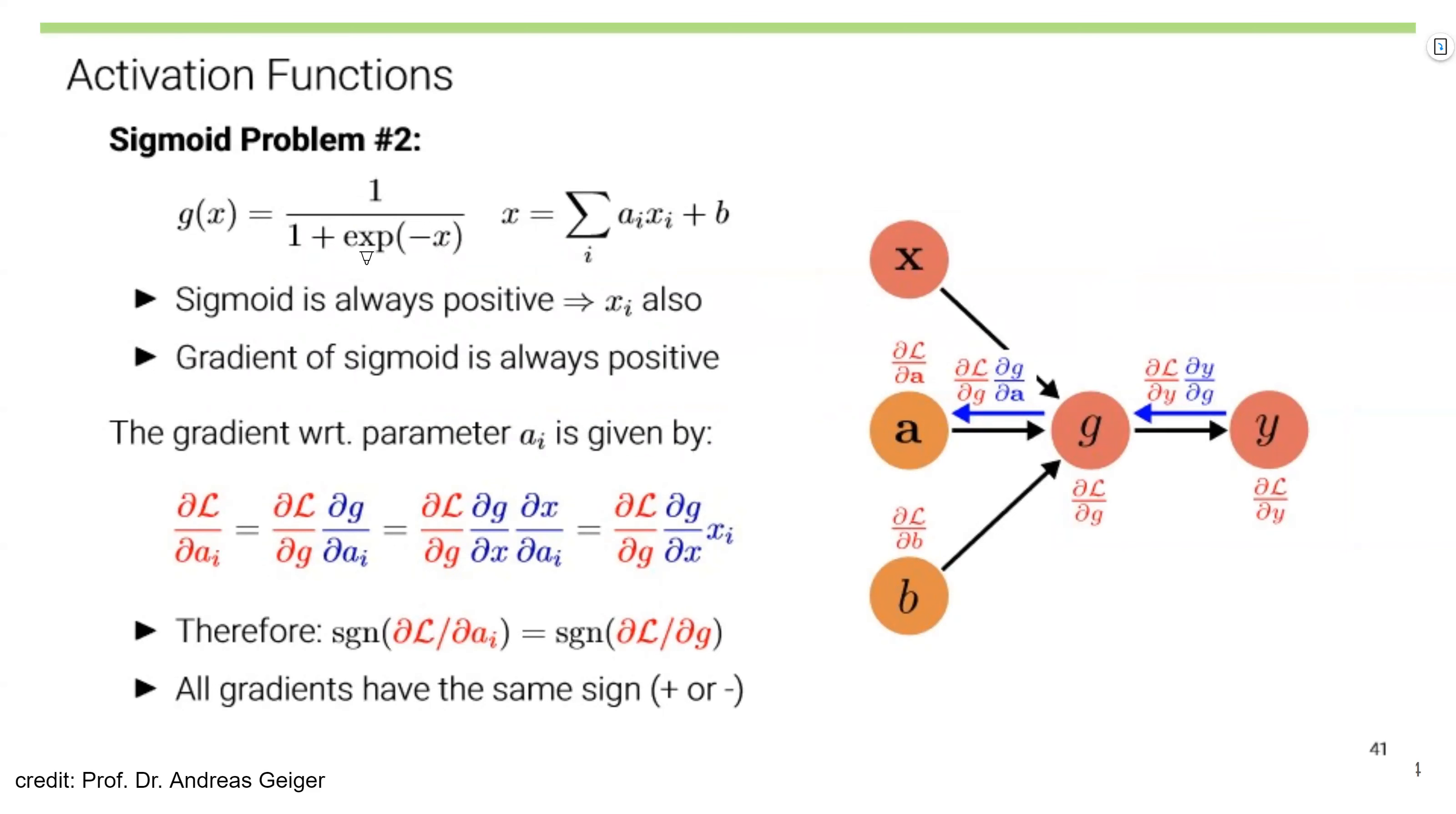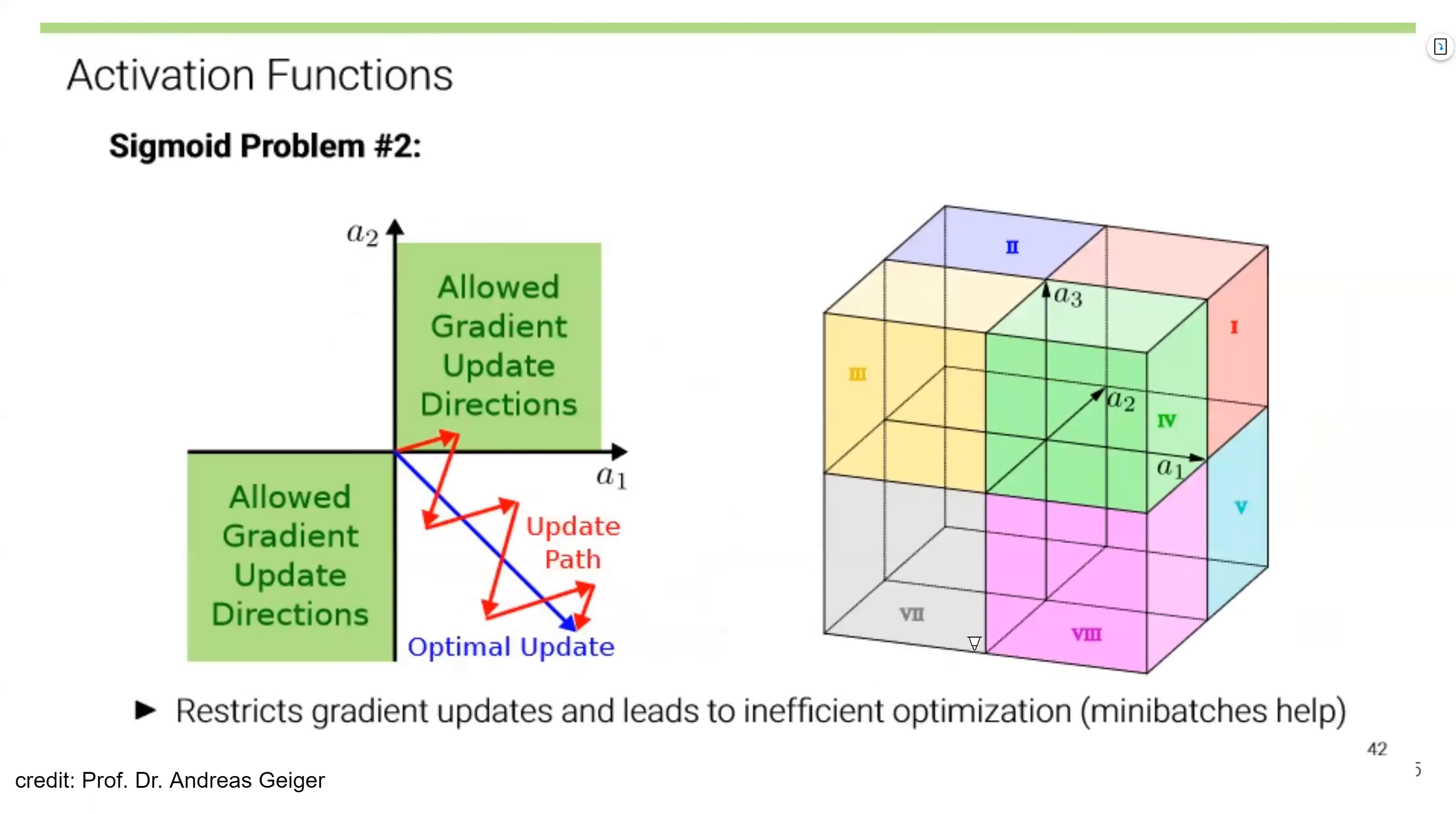The second problem is the result of sigmoid is always positive, and the gradient of sigmoid is also positive. Therefore, the sign of the gradient becomes the same, meaning that all gradients will have the same sign. This could lead to some bias and performance degradation. As you can see from this figure, gradients only update following certain directions. Gradient directions are restricted, and this could lead to inefficient optimization. In 3D space, you only have one direction to go to update the gradient, the weights.